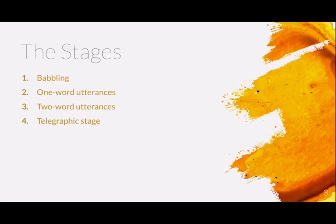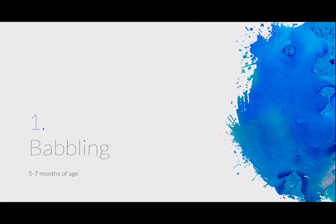These are the stages of child language acquisition. We talk about four stages: babbling, one-word utterances, two-word utterances, and the telegraphic stage. The first one is babbling, which happens from around five to seven months of age until the child starts learning to actually speak words themselves.